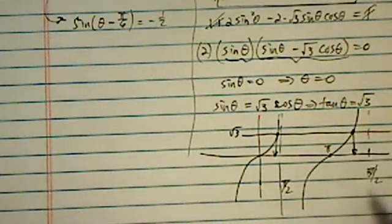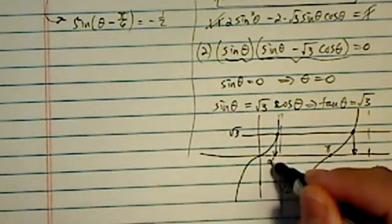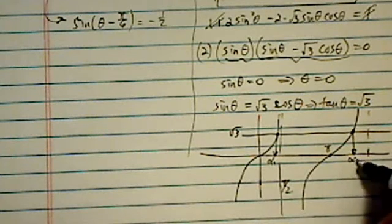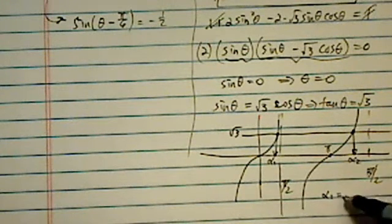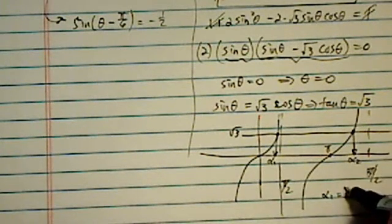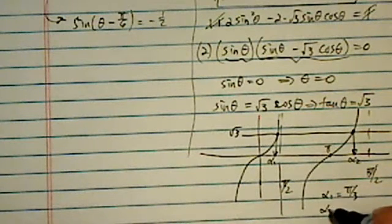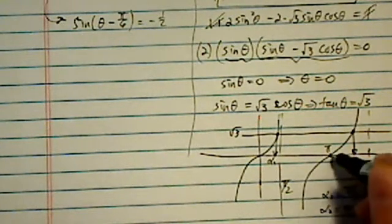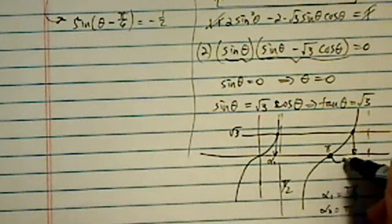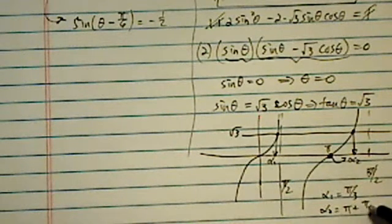And this is the pi. Now let's call this one α₁, α₂. So α₁ is going to give me π/3. α₂ is equal to π, that's referenced here, added π/3.